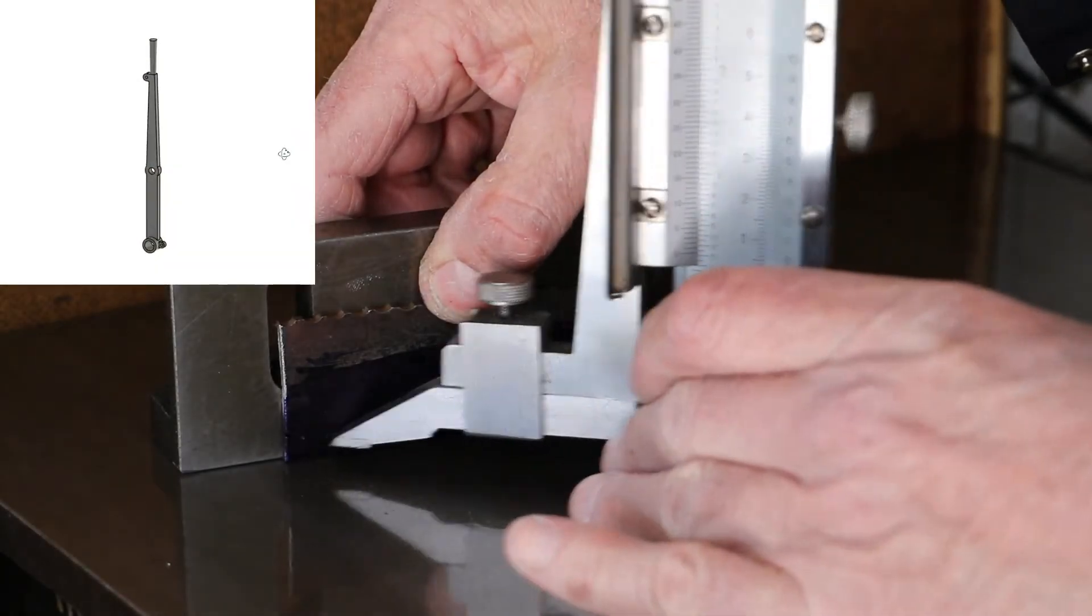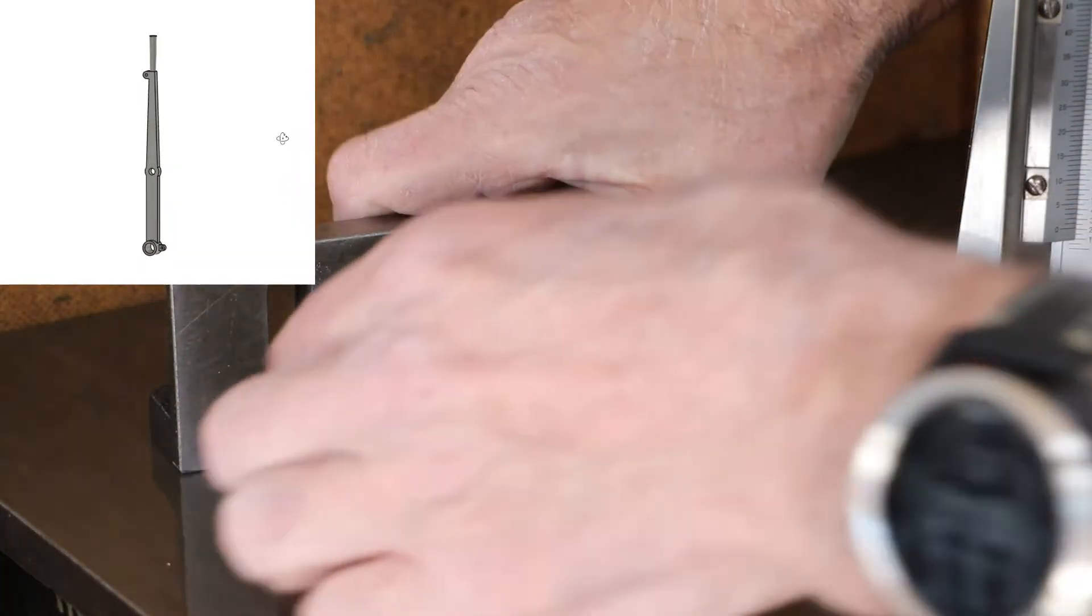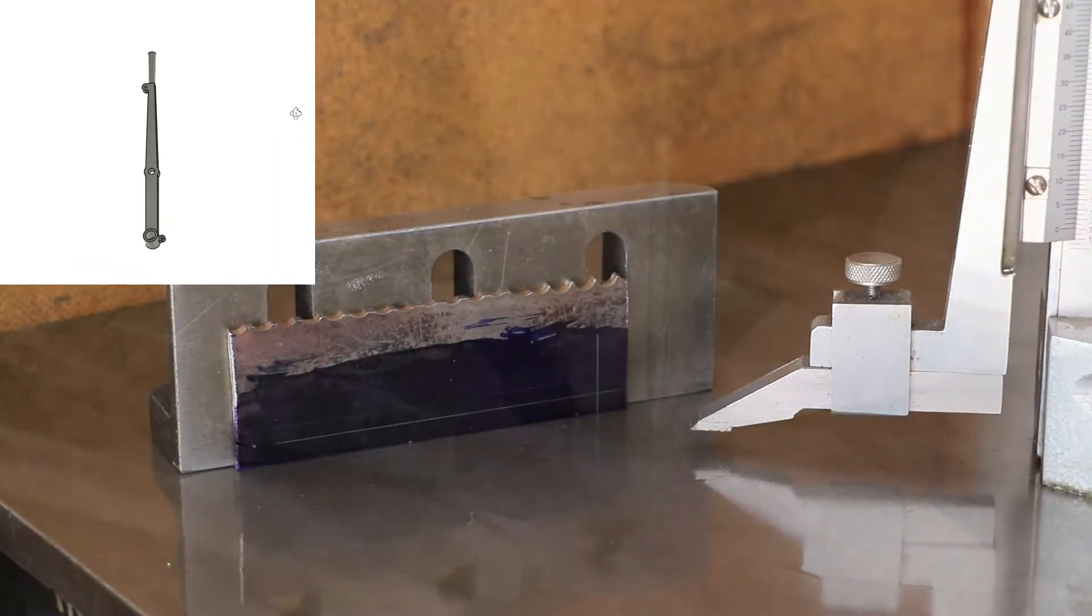For the lever I use a bit of 3.2mm plate. I've already cleaned up one edge, which allows me to mark off some of the key lines.